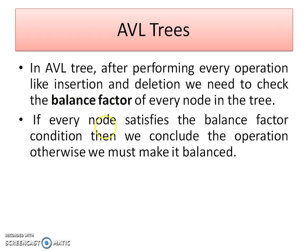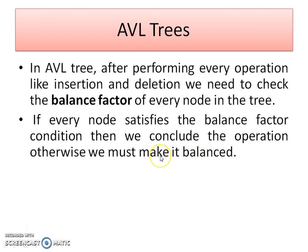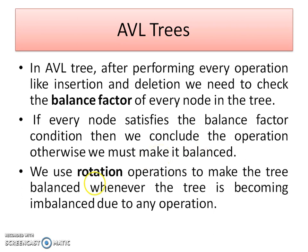If the balance factor satisfies the condition after performing either operation, then we can say that the tree is balanced and we conclude the operation. Otherwise, if the balance factor is not lying between minus 1, 0, and 1, we need to make it balanced again. To make it balanced, we need to use a tool called rotation. Rotation is the operation used to make the tree balanced if it becomes imbalanced due to any operation like insertion or deletion.